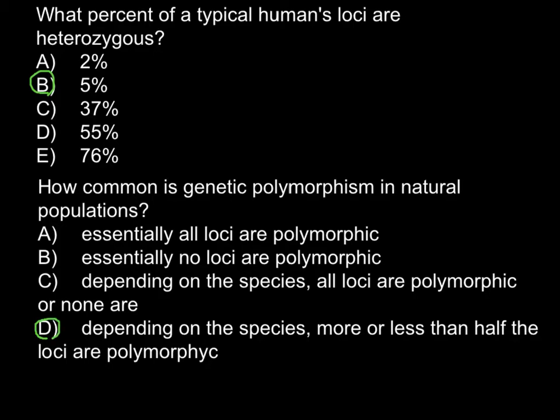So depending on the species, more or less than half of loci are polymorphic. You may wonder why about half of loci have many different alleles, and yet only 5% of them are present in the heterozygous form. The answer is because not all different variants of genes are considered to be alleles.